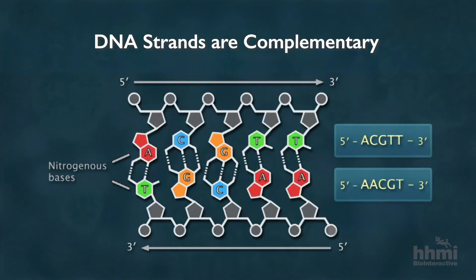And the bottom strand has the sequence A, A, C, G, T when read in the five prime to three prime direction. The bottom sequence is made of bases complementary to those in the top sequence, but in the reverse order.